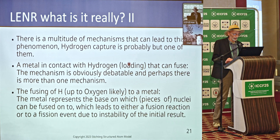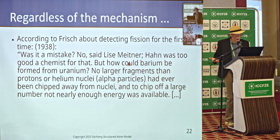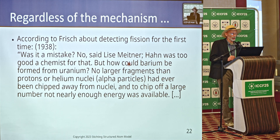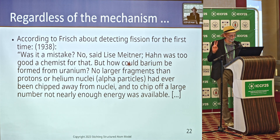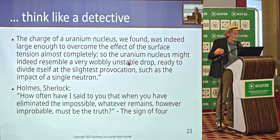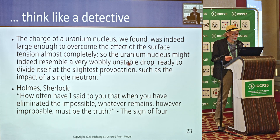A metal in contact with hydrogen loading that can fuse — the mechanism is obviously debatable, and perhaps there is more than one. The fusing of hydrogen up to oxygen to a metal, whereby the metal represents a base on which pieces of nuclei can be fused, leads to all kinds of reactions. Regardless of the mechanism, already in 1938 people were quite astonished — according to Frisch: 'Was it a mistake? No, said Lise Meitner — Hahn was too good a chemist for that. But how could barium be formed from uranium? No larger fragments than protons or alpha particles had ever been chipped away from nuclei.' The charge of the uranium nucleus was indeed large enough to overcome surface tension almost completely.